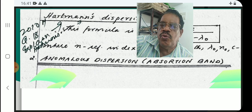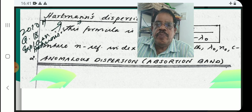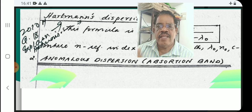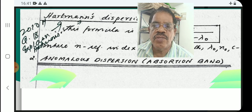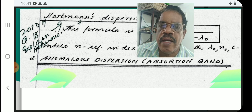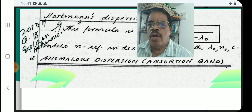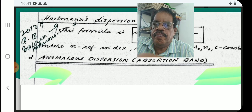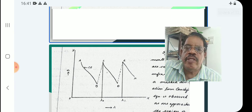Now we pass on to anomalous dispersion. Anomalous dispersion always happens at the absorption band. Until the absorption band region, we have normal dispersion.